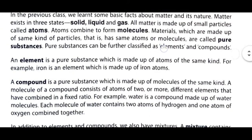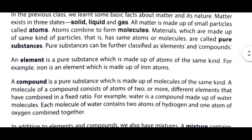What is element? An element is a pure substance which is made up of atoms of same kind. For example, iron is an element which is made up of iron atoms. Elements eek aisa pure substance hai joh kival ek hi tereh ke atoms ka bana hootay hai — jayse iron, iron ke atoms se bana hootay hai.